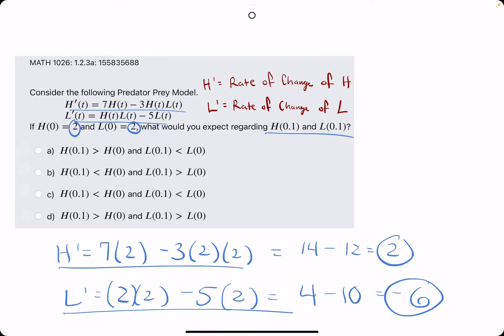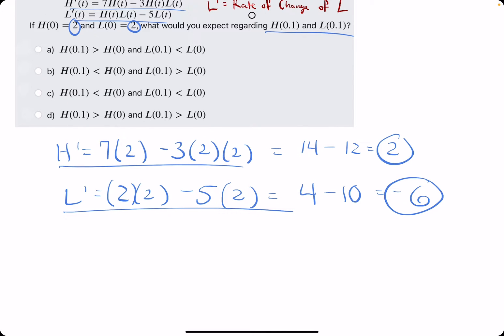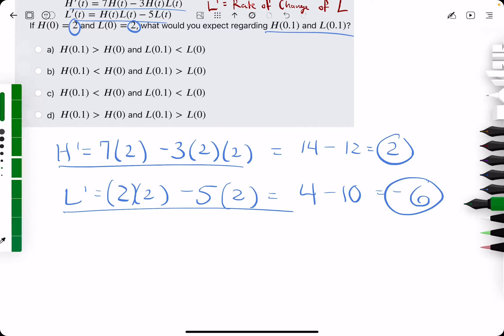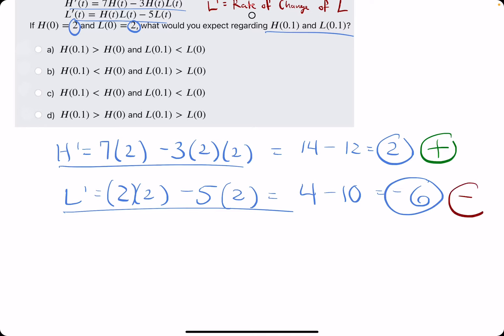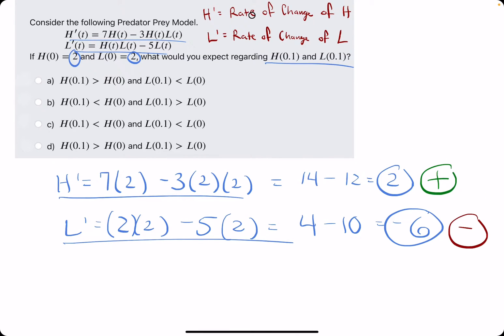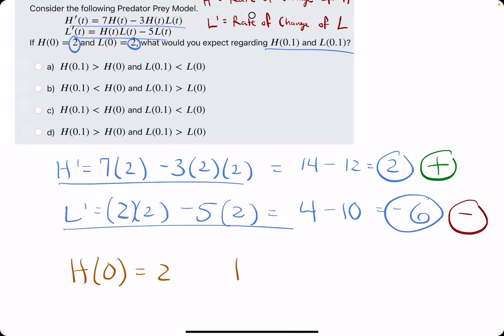h prime is the rate of change of h, l prime is the rate of change of l. The important piece is whether they are positive or negative. If h prime has a positive rate of change at 0, what that means is if H(0) is equal to 2 and we know it has a positive rate of change, that means H(0.1) should be greater than 2. Let's just make up a number, 2.2.